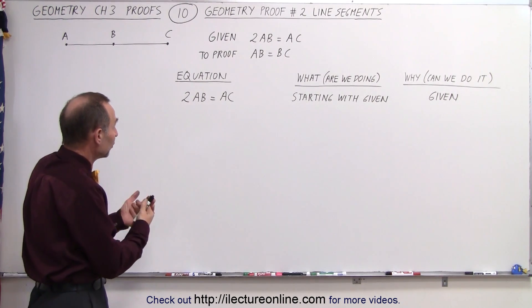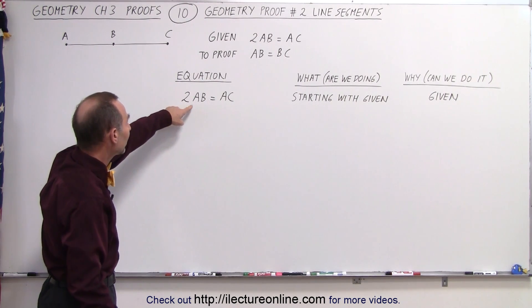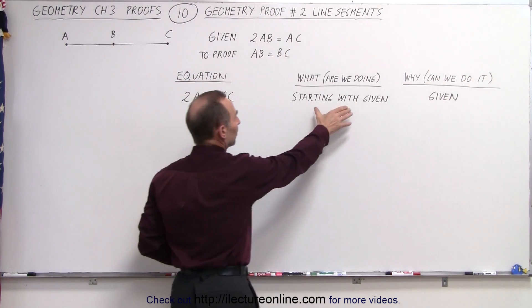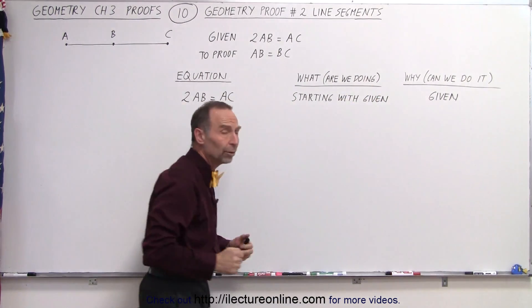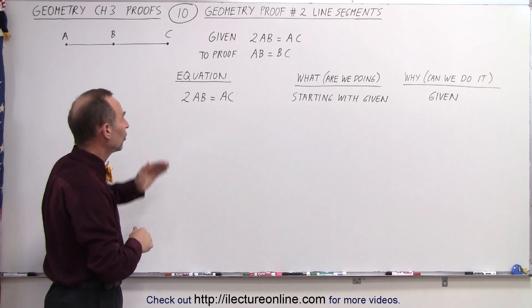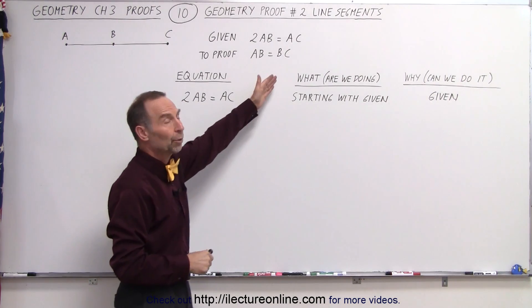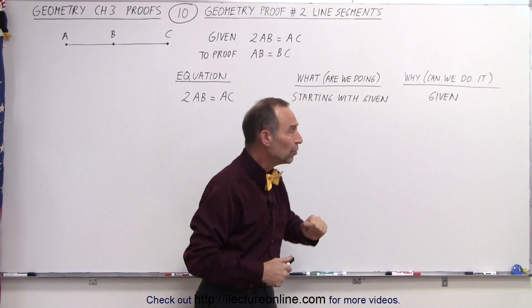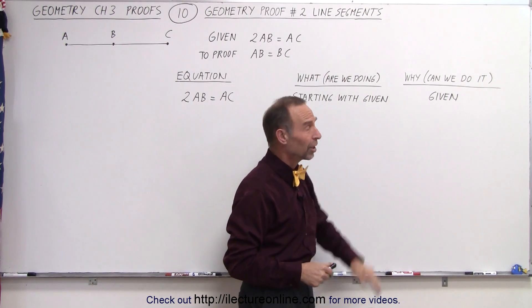So we're going to start out with what's given to us. We're given that twice the length of AB equals the length of AC. We're starting with what was given and we can do it because that was given to us. We don't have to prove that. So notice we write down the equation, we write down what we are doing, and then we write down why we can do that. And this is probably the most important column of all.